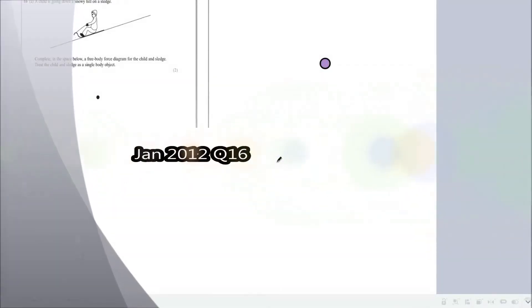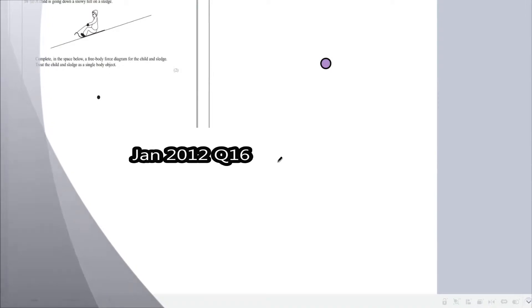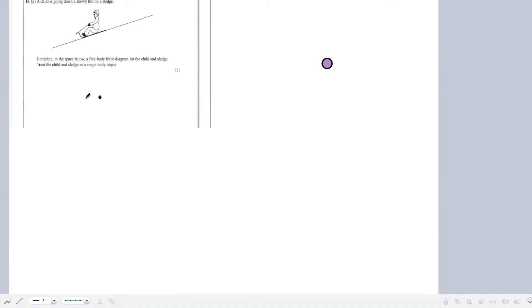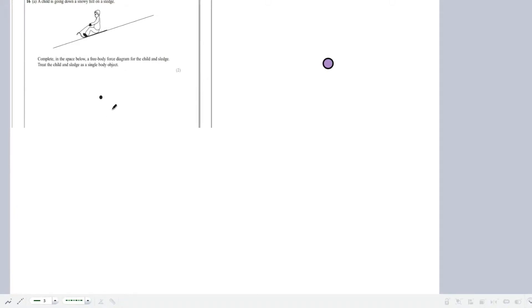Hello and welcome to the Jam 2012 Question 16 Paper 1 walkthrough, looking at a child going down a hill on a sled. The first part of this question is trying to get us to draw a three-body diagram of the child and the sled, treating the sled and the child as a single-body object.